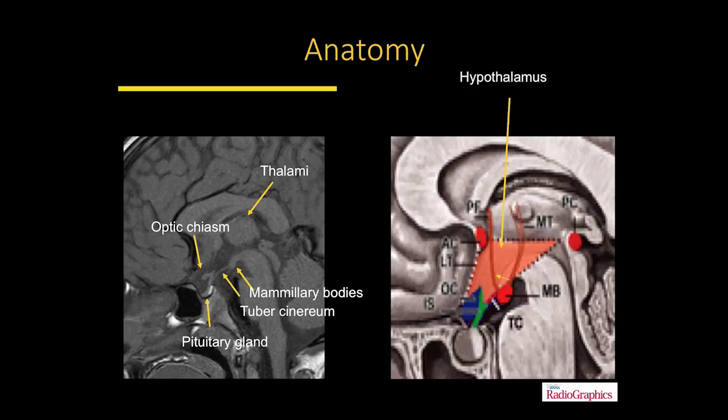Sometimes they just hang down from the tuber cinereum. Sometimes they involve the mammillary bodies or the third ventricle. This area above the tuber cinereum is the third ventricle, and around the third ventricle is the hypothalamus. As we go down, we have the pituitary stalk that leads to the pituitary gland. In the front we have the anterior pituitary, which appears as a dark area, and this brighter area is the posterior pituitary — they have different hormonal functions.